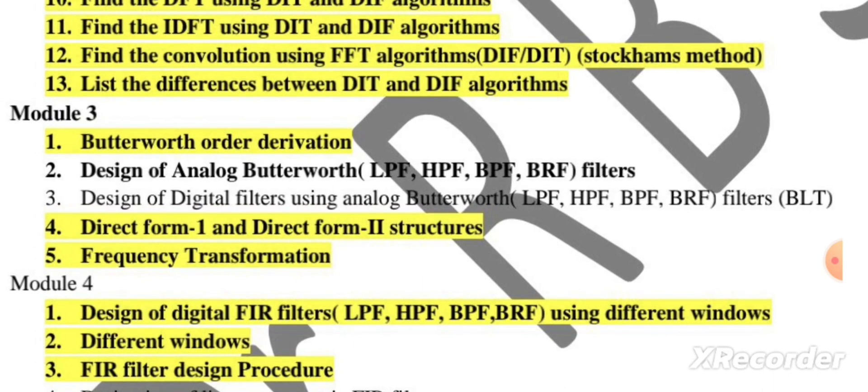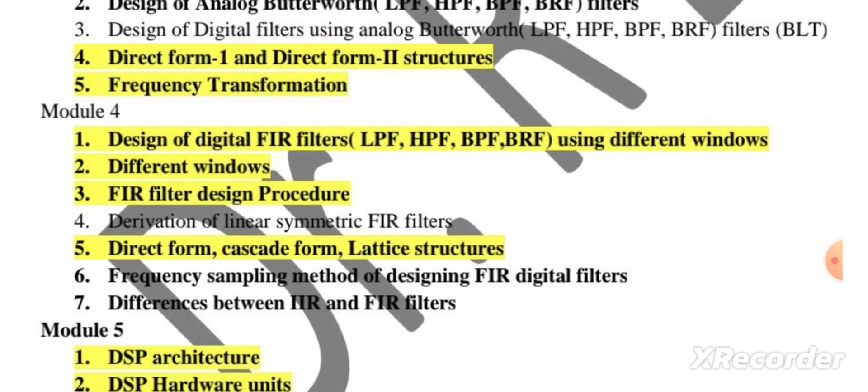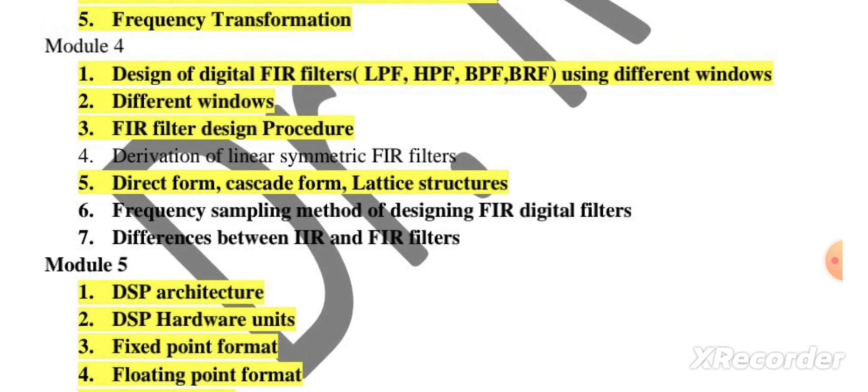Coming to Module 4, again design of digital FIR filters using different windows and FIR filter design procedure. Derivation of linear symmetric FIR filter, direct form, cascade form, lattice structure. Frequency sampling method of designing FIR digital filters. Differences between IIR and FIR filters may be asked in Module 4.